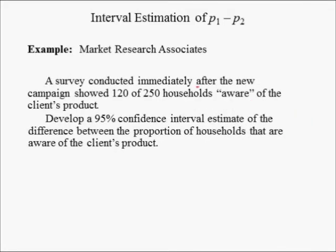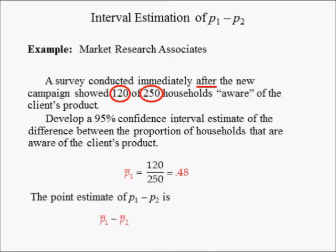A survey conducted immediately after the new campaign showed 120 of 250 households aware of the client's product. Develop a 95% confidence interval estimate of the difference between the proportion of households aware of the client's product. The sample proportion after the ad campaign is denoted p-bar 1, and is equal to 120 divided by 150, or 0.48. The point estimate of the difference in population proportions is 0.48 minus 0.4, or 0.08. This difference only provides anecdotal evidence of the ad campaign's effectiveness — we need statistical evidence.